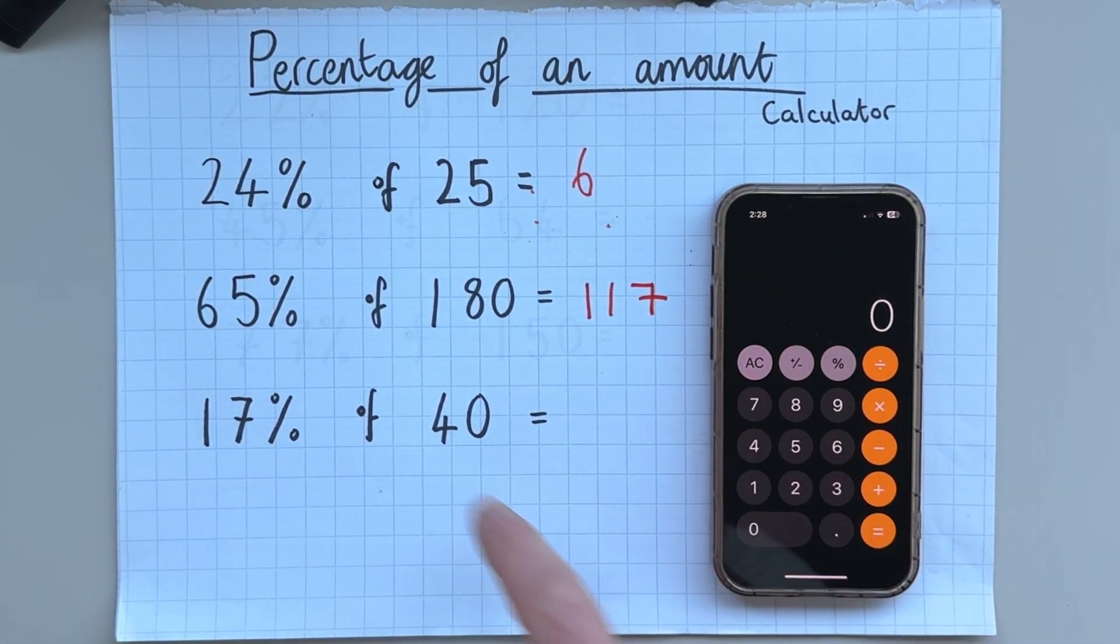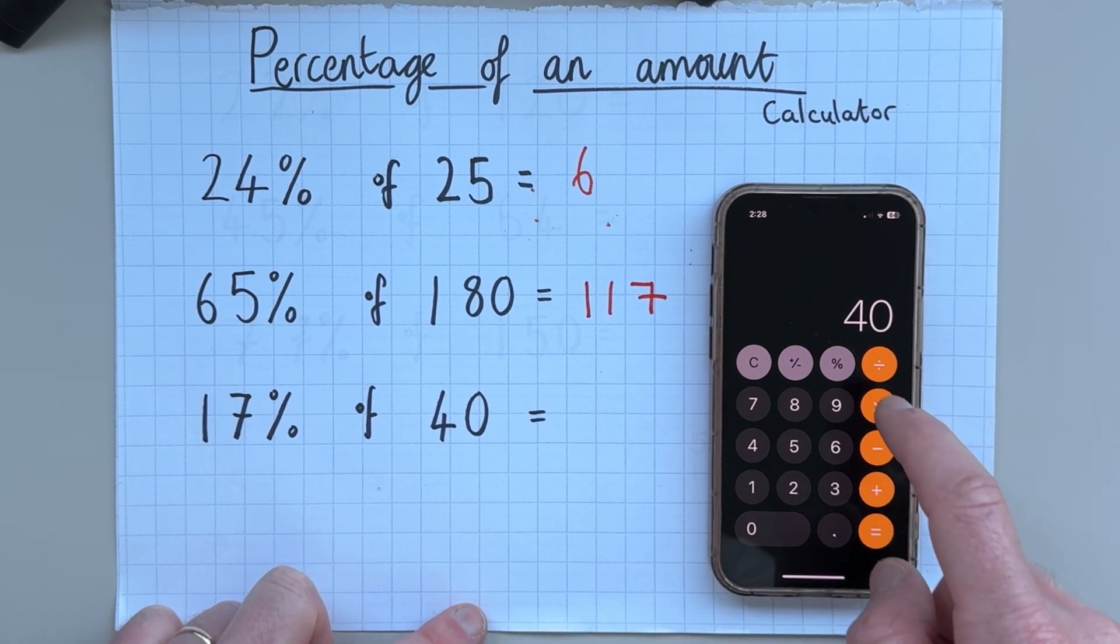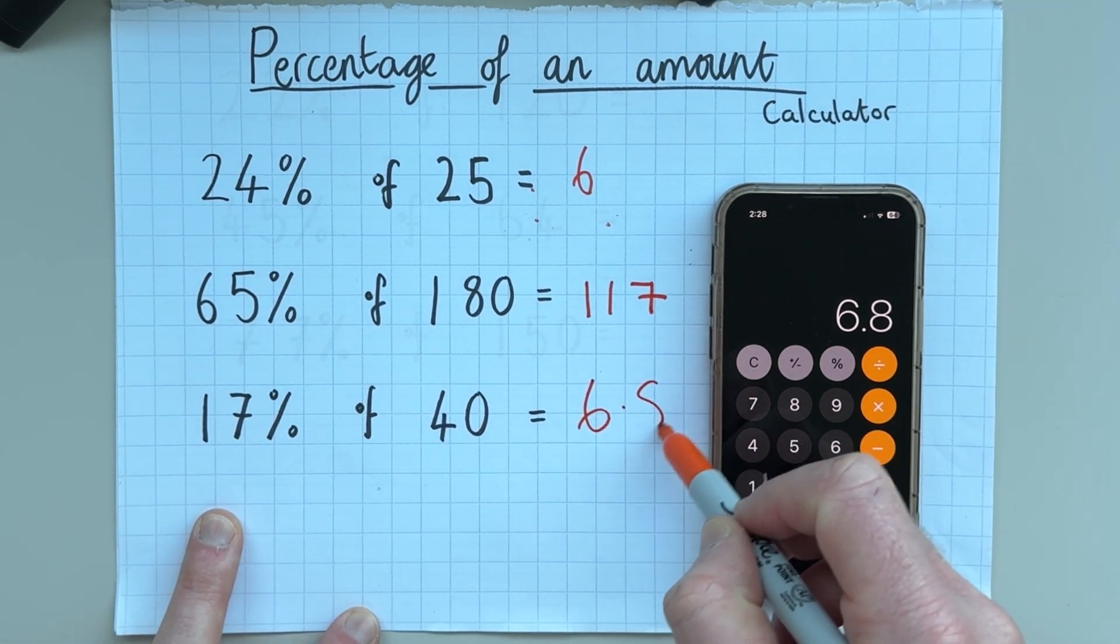And then finally 17% of 40. So I'm going to take 40 and I'm going to multiply it by 0.17, which gives 6.8.